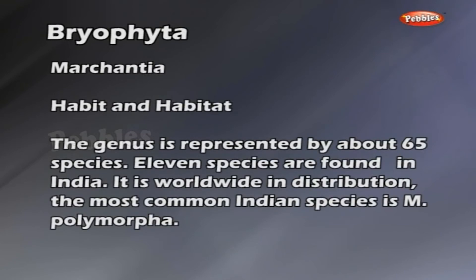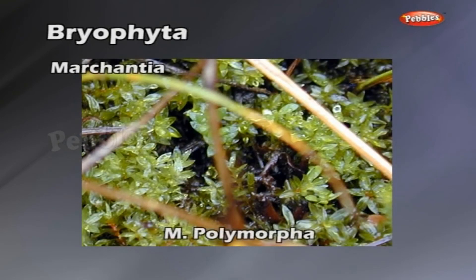Marchantia — habit and habitat. The genus is represented by about 65 species, of which eleven are found in India. It is worldwide in distribution. The most common Indian species is M. polymorpha, distributed in hilly regions. The genus grows luxuriantly in moist, shady places, in open woodlands or on shaded cliffs.